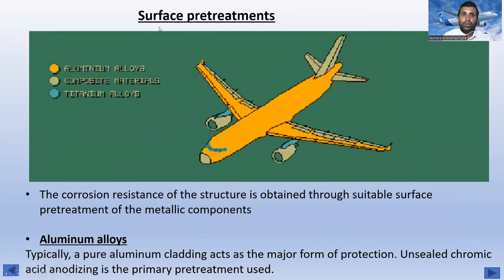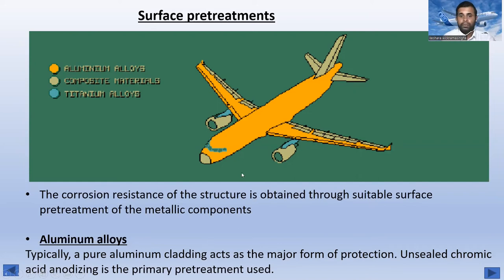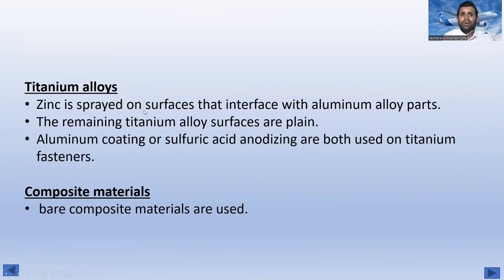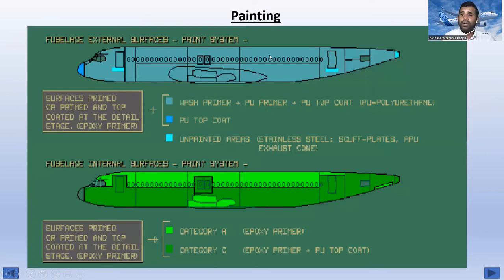Now, surface pre-treatment: the diagram shows aluminum alloy, composite materials, and titanium. Corrosion resistance is obtained through suitable surface pre-treatment of metallic components. For aluminum alloys, a pure aluminum cladding acts as the main protection, and unsealed chromic acid anodizing is the primary pre-treatment. For titanium alloy, zinc is sprayed on surfaces that interface with aluminum alloy parts; remaining titanium surfaces are plain, or aluminum coating or sulfuric acid anodizing is used on titanium fasteners. Bare composite materials are used as-is.